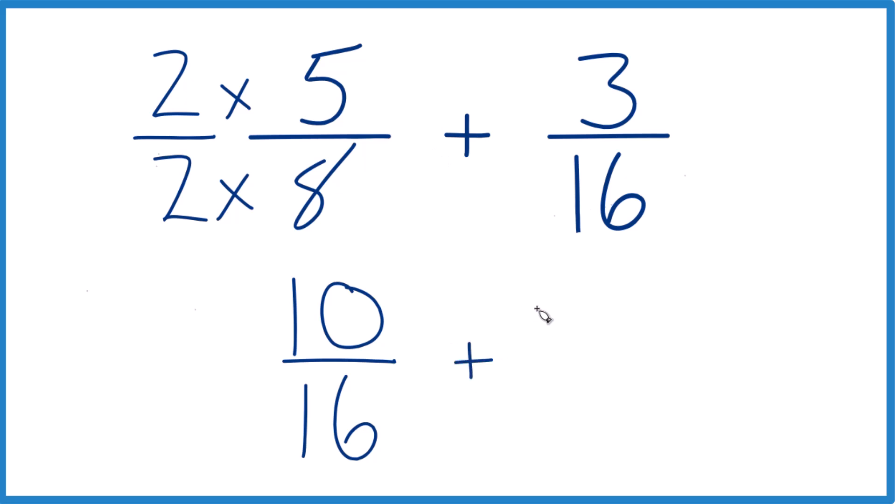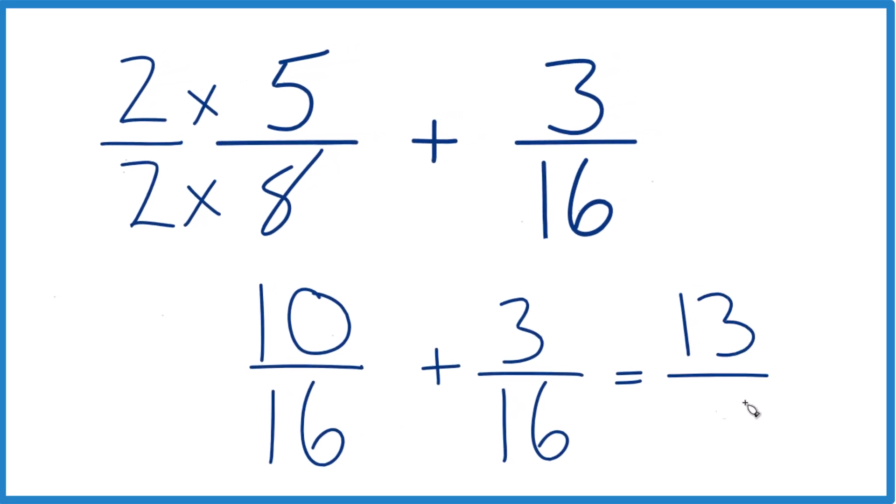Now we can add our 3 sixteenths. Because these denominators are the same, we just add the numerators. 10 plus 3 is 13. Bring that 16 across. And 5 eighths plus 3 sixteenths equals 13 sixteenths. This is Dr. B, and thanks for watching.